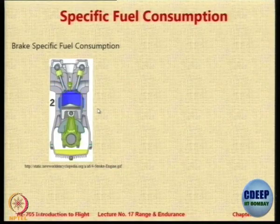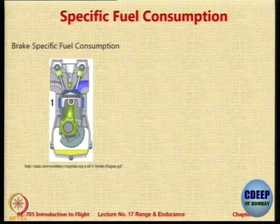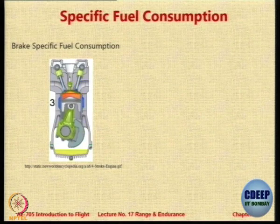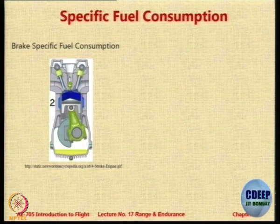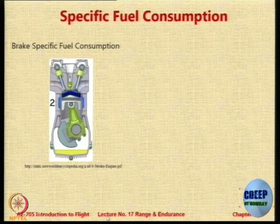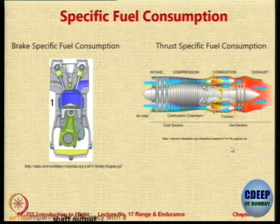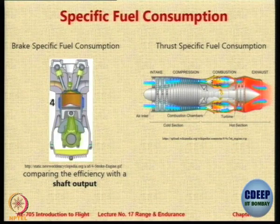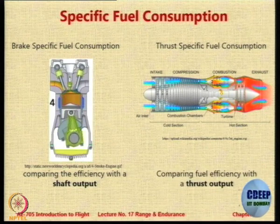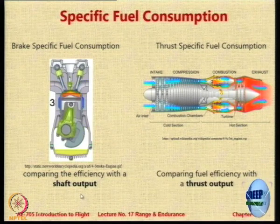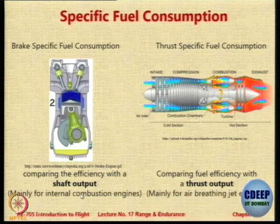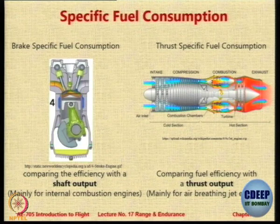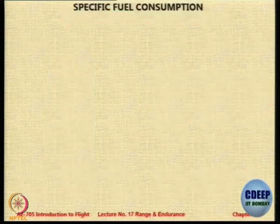Let us look at what exactly determines how much you can travel on a given amount of fuel. One of the important parameters is the SFC. For an IC engine it is the brake specific fuel consumption and for a jet engine it is TSFC. In the IC engine we are concerned about the brake or shaft horsepower, whereas here we are concerned about the thrust produced directly. Depending on whether you are concerned about power or thrust, there are two different definitions for specific fuel consumption.